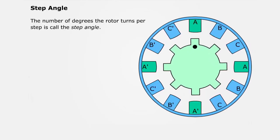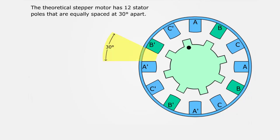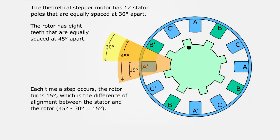The number of degrees the rotor turns per step is called the step angle. The number of rotor teeth and the number of poles determines the step angle. The theoretical stepper motor has 12 stator poles that are equally spaced at 30 degrees apart. The rotor has 8 teeth that are equally spaced at 45 degrees apart. Each time a step occurs, the rotor turns 15 degrees, which is the difference of alignment between the stator and the rotor.